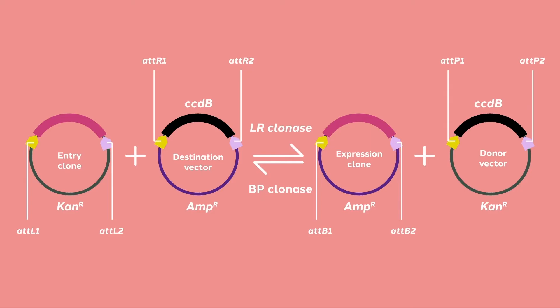Since gateway cloning is moving elements from one plasmid to another, they do not refer to integration and excision, but rather the BP reaction, going from BP to LR sites, and the LR reaction, going from LR to BP sites. These two recombination events are perpetually reversible.